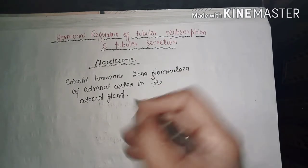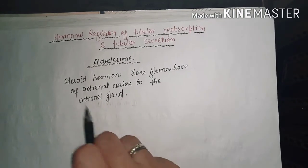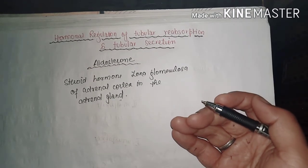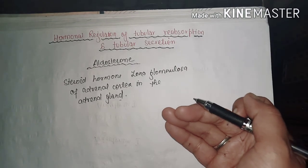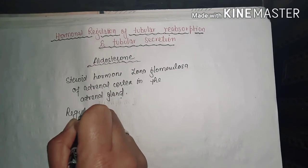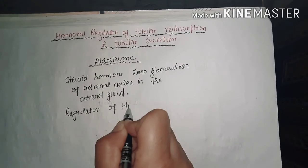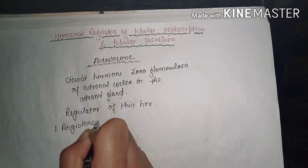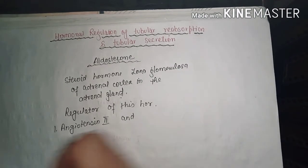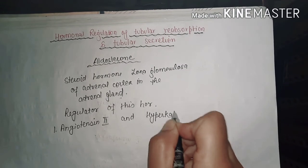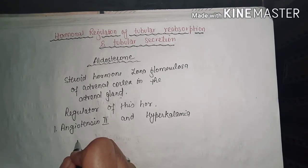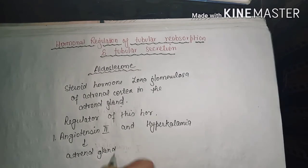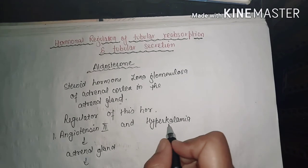This adrenal gland is stimulated by angiotensin 2, which we will discuss in the renin-angiotensin-aldosterone system. The regulators of this hormone are, first, angiotensin 2, and second, hyperkalemia. Angiotensin 2 stimulates the adrenal gland to produce this aldosterone hormone.